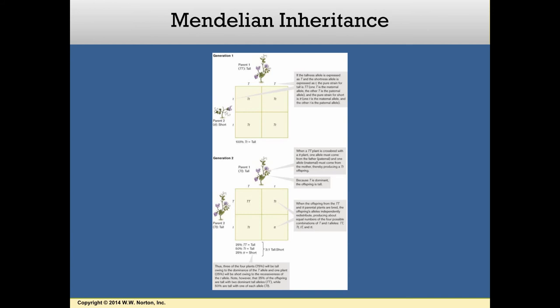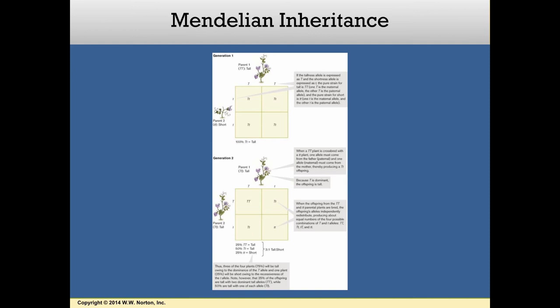Mendel's work showed how inheritance actually works. Unfortunately, his work went unnoticed until after his death, when three botanists independently rediscovered and replicated his findings. Mendel's work on inheritance provides an understanding of how variation arises and is passed from generation to generation. Darwin's work provides an understanding of how that variation leads to differential survival and reproduction. Together, these two big ideas of inheritance and natural selection can be combined into an evolutionary synthesis. An understanding of both genetics and evolutionary processes helps us answer questions such as why genes change in frequency, and how the total sum of genes — the so-called gene pool — varies within and across populations. This latter question has led to an entirely new field of science known as population genetics.